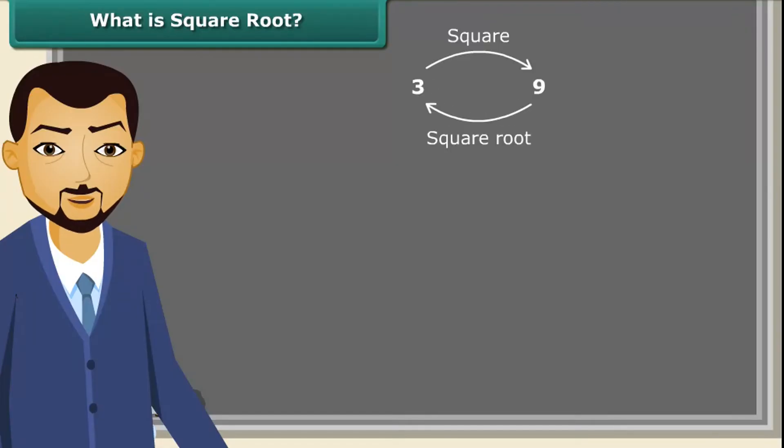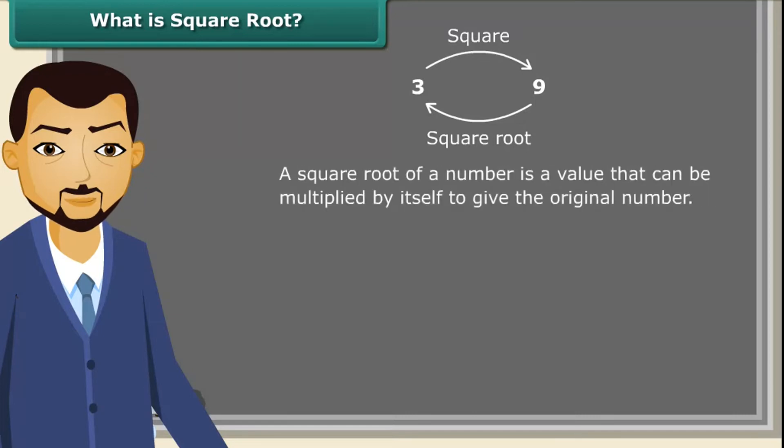Square root is an inverse operation of squaring. It is a value that can be multiplied by itself to give the original number. So we can say when 4 is multiplied by 4, we get 16, which means 4 is a square root of 16. Square root is represented by a special symbol. It is called the radical. We can use it like this. Square root of 25 is 5.